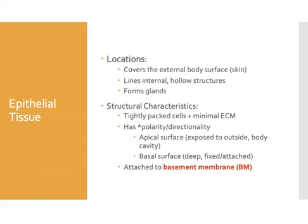In your notes, put a star next to the three places where epithelial tissue is found in the body. It covers the outer surface of our skin, it lines all of the hollow organs and hollow passageways within the body, and it forms all of the glands within the body. Epithelial tissue is made out of epithelial cells and extracellular matrix, but what makes it unique is that the cells are very tightly packed against each other.